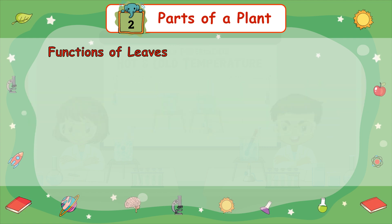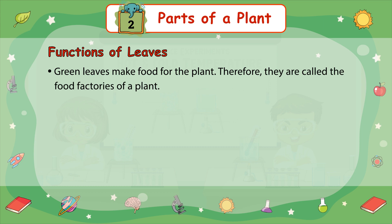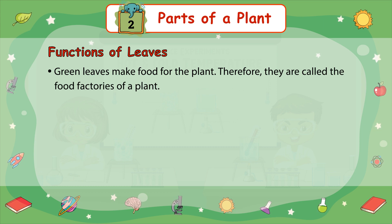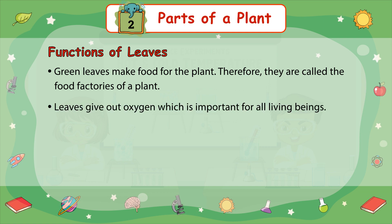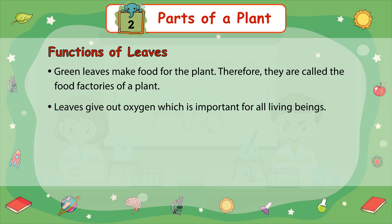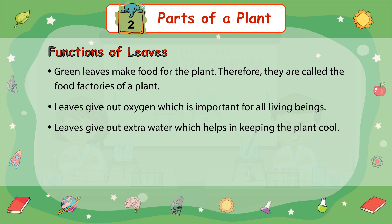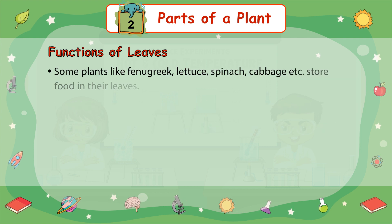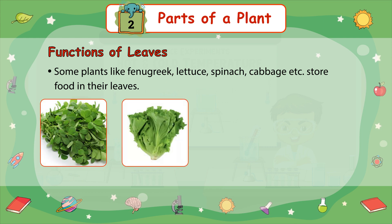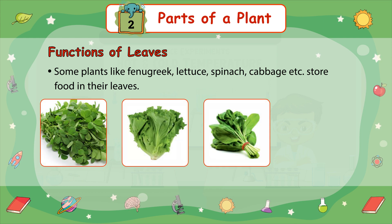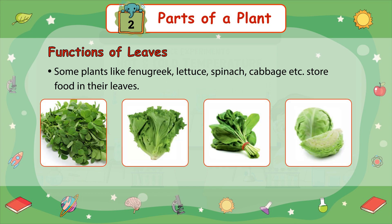Functions of leaves: green leaves make food for the plant, therefore they are called the food factories of a plant. Leaves give out oxygen, which is important for all living things. Leaves give out extra water, which helps in keeping the plant cool. Some plants like fenugreek, lettuce, spinach, cabbage, etc. store food in their leaves.